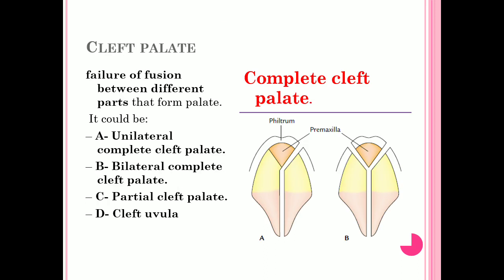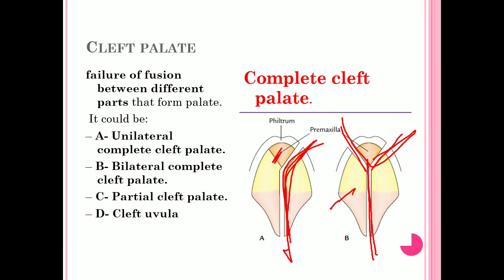Complete cleft palate can be unilateral or bilateral. In unilateral complete cleft palate, only one side of the primary and secondary palate has fused, with a cleft extending from anterior to posterior up to the uvula. In bilateral complete cleft palate, the pre-maxilla fails to fuse with the secondary palate on both sides, and the cleft extends to the uvula.